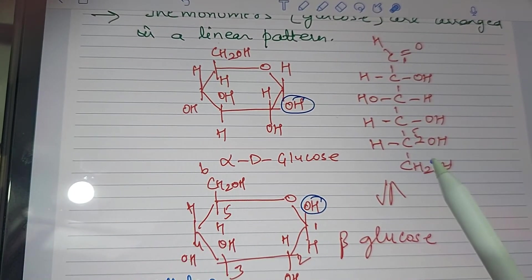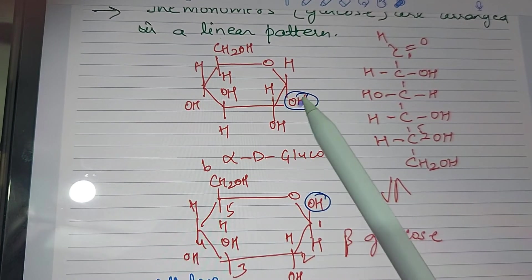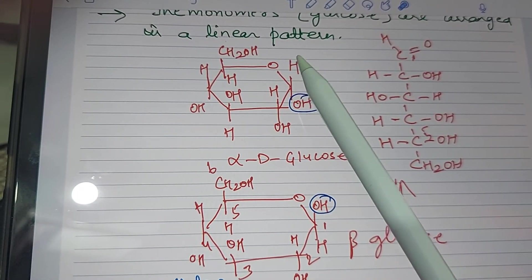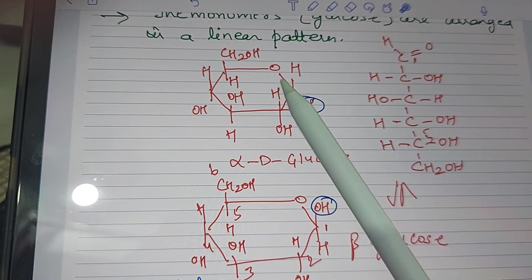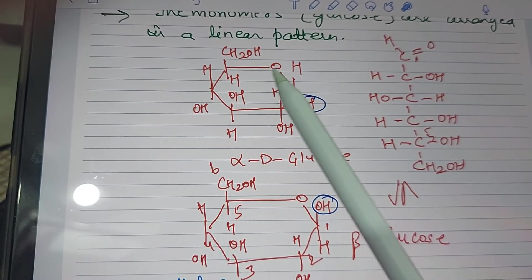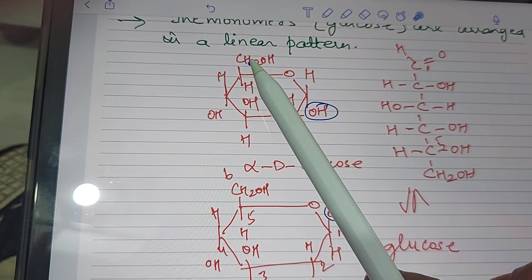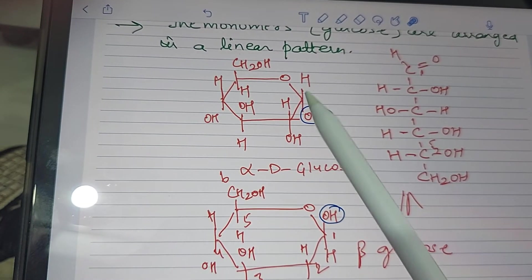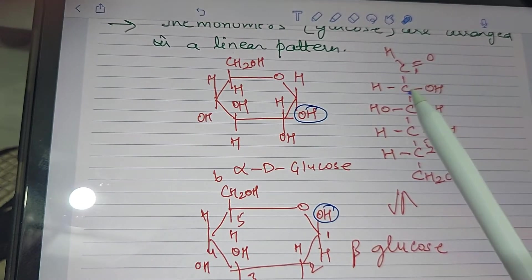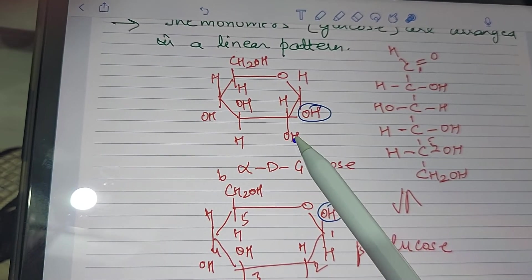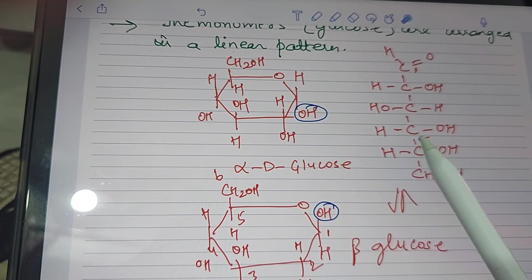As discussed in our previous video, this is how glucose converts into a ring structure. The first carbon combines with the fifth carbon, while the sixth carbon remains outside the ring. The rest of the chain follows: the second carbon is here, third carbon, and fourth carbon.